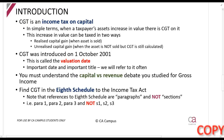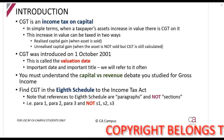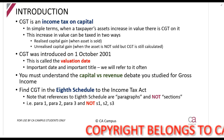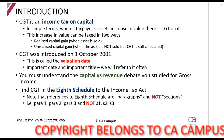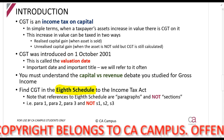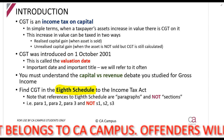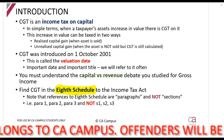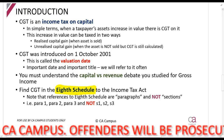Welcome to this lecture on capital gains tax. Capital gains tax (CGT) is an income tax on capital — it forms part of the Income Tax Act. It is included in one of the schedules called the Eighth Schedule, which is at the back of the Income Tax Act. Schedules are amendments, addendums, and different types of taxes or processes which relate to or do not form part of the Income Tax Act itself.